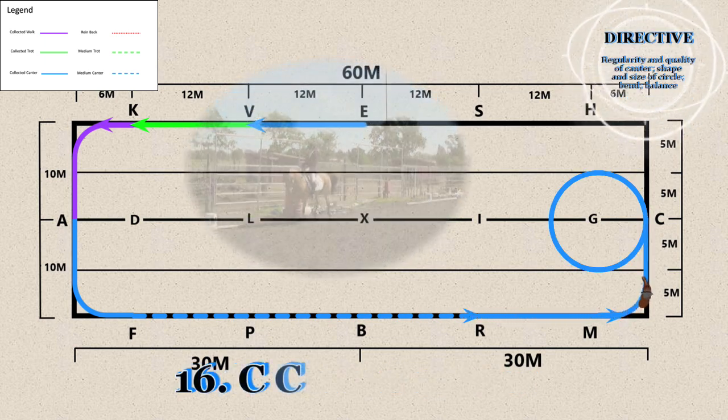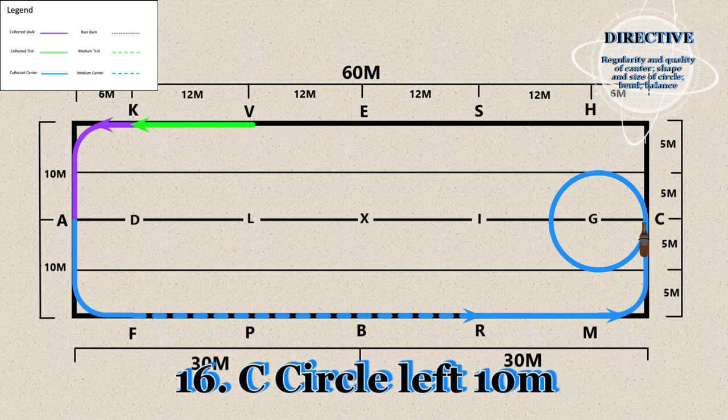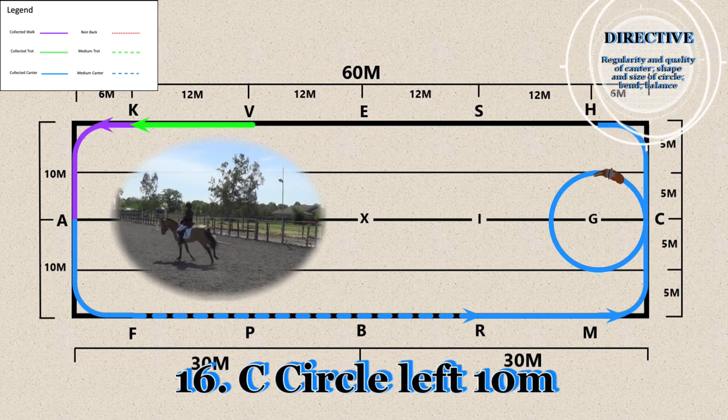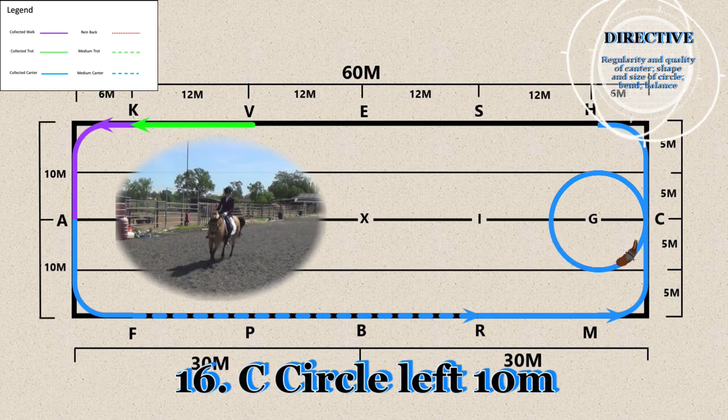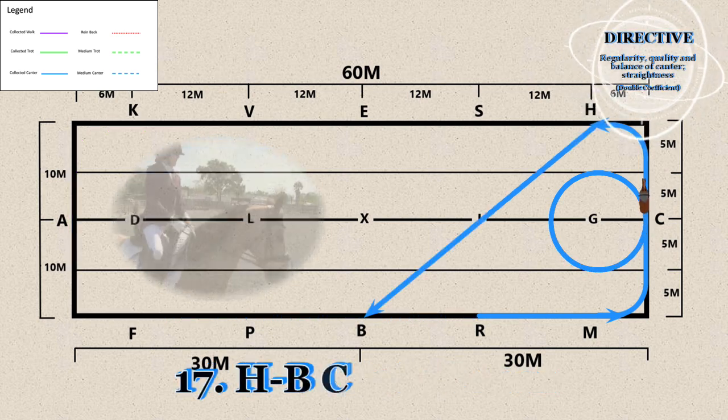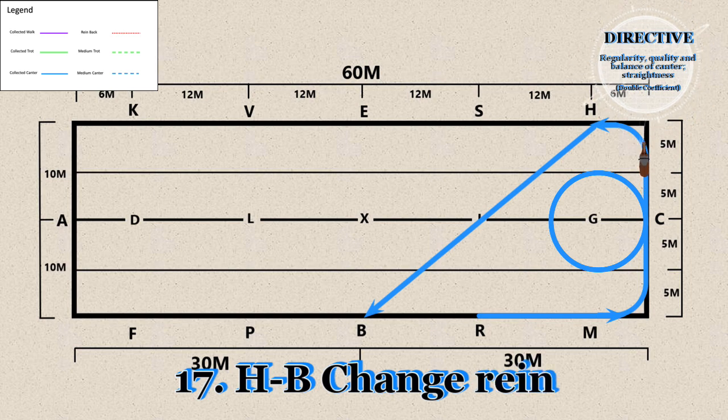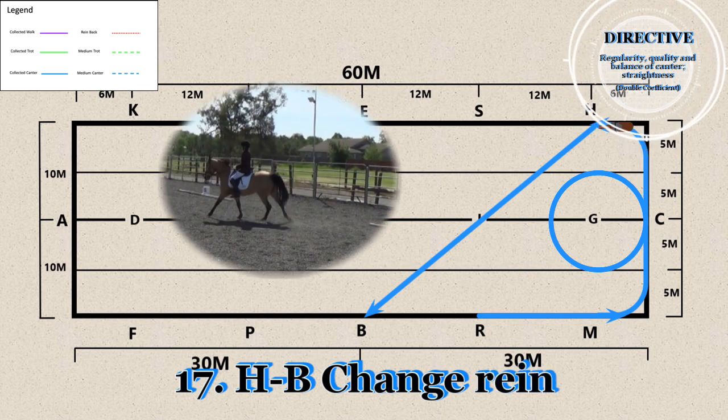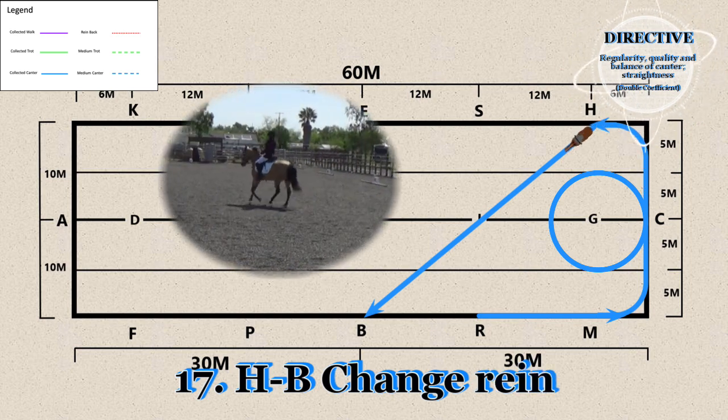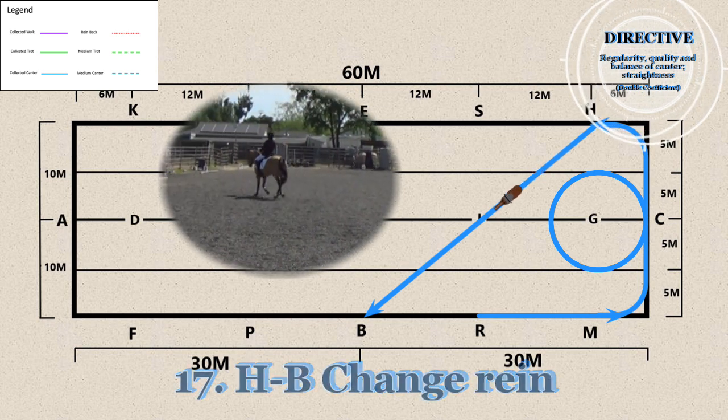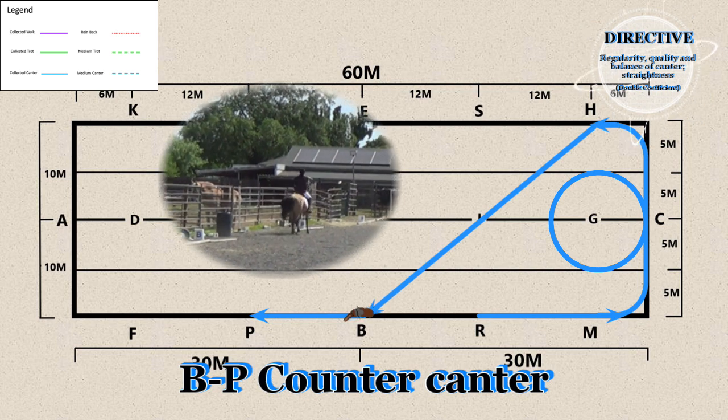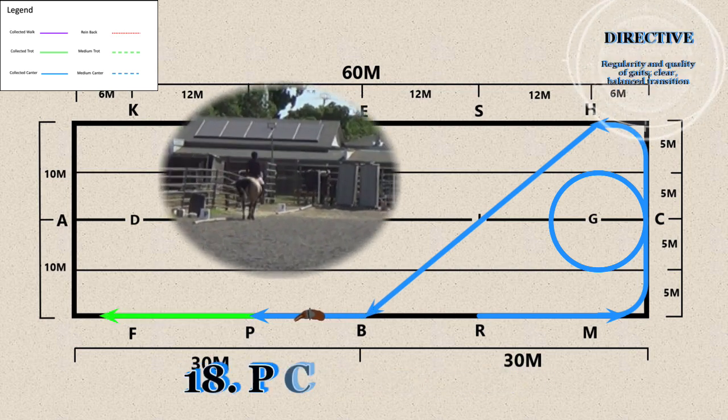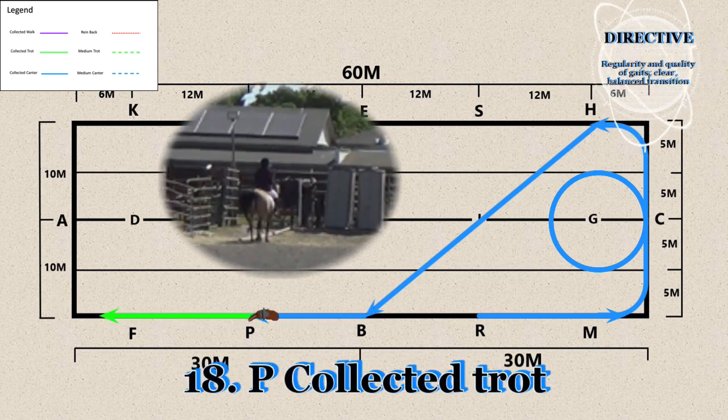16. C - Circle left 10 meters. 17. H through B - Change rein. B through P - Counter canter. 18. P - Collected trot.